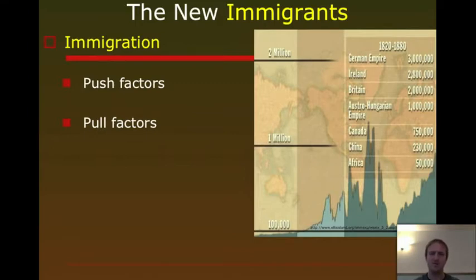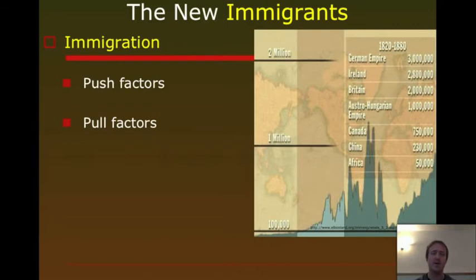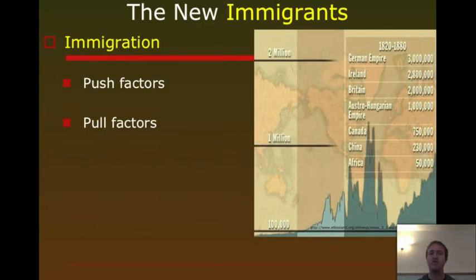As far as push factors are concerned in the immigration that happens in the second half of the 19th century, there are many different reasons. Religious persecution could be some of it. With the Irish potato famine, we see that lack of food and poor soil is a reason why people are leaving their country. Pull factors in the second half of the 19th century range from economic freedom — opportunity is a really big one for immigrants coming into the United States.